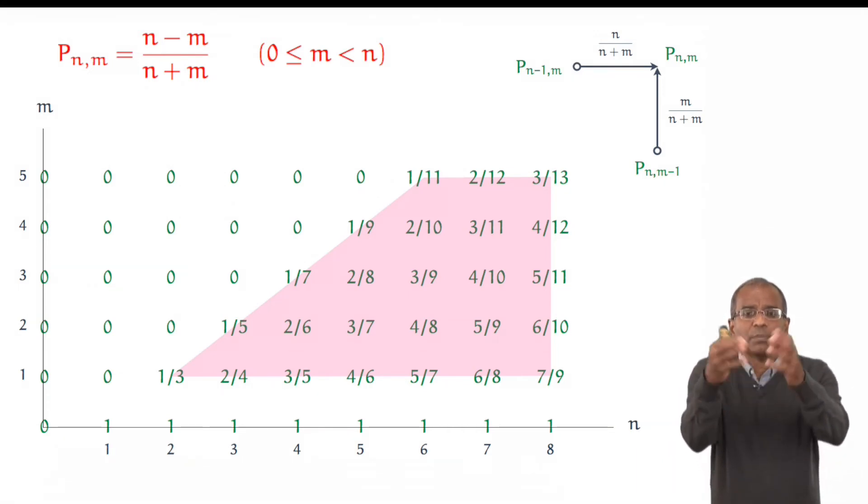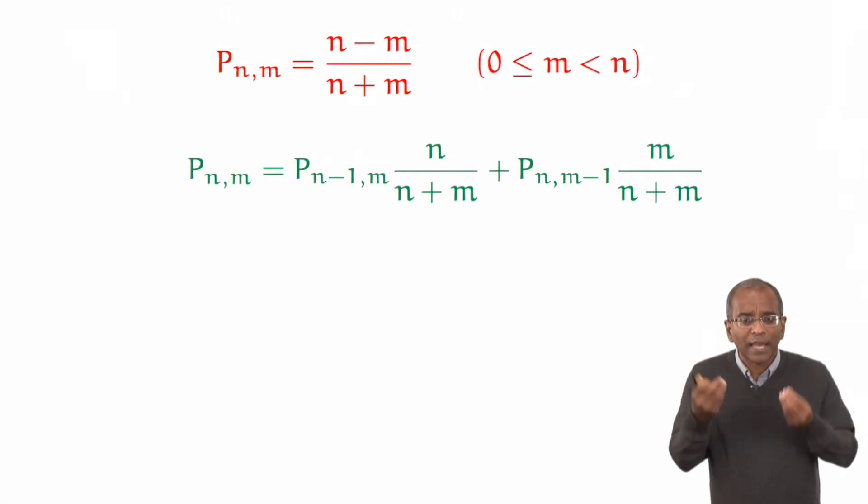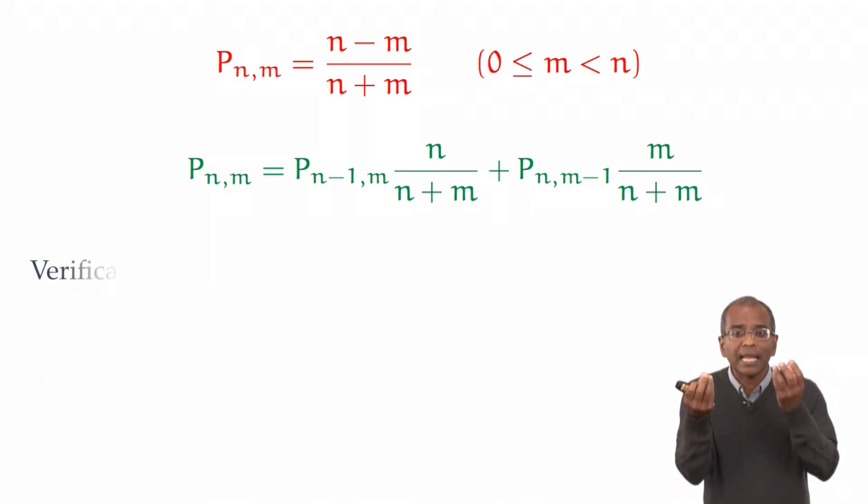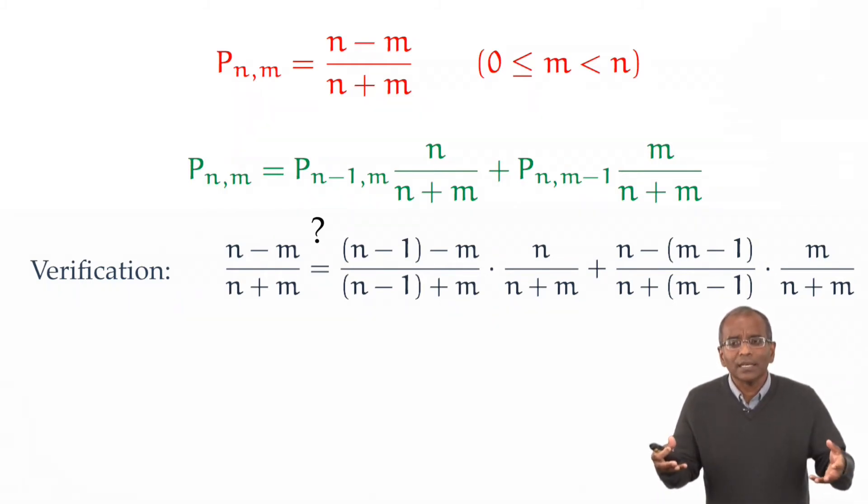Of course, one shouldn't believe a formula just because it appears on screen or in a book. One should verify it to make sure we believe the structure. So let's take a look at how we might verify this. Here is a projected or putative answer. P of n, m is n minus m over n plus m. And there's a recurrence that P of n, m needs to satisfy. To verify it, let us see if the left-hand side is, in fact, equal to the right-hand side. On the left, I have n and m in play. On the right, I have two terms, one involving n minus 1 and m, and one involving n and m minus 1. If our formula is valid, we plug in and we get fractions. Simplify and verify we have an identity. And we do have a solution, and a particularly simple and elegant one at that.